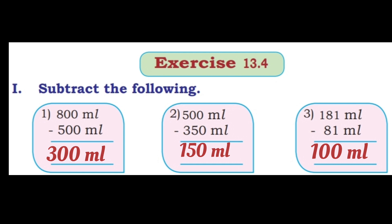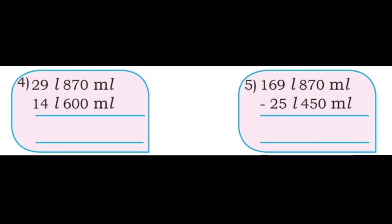Third question: 181 ml minus 81 ml. 1 minus 1 is 0, 8 minus 8 is 0, 1 remaining. Answer: 100 ml. Fourth question: 29 liter 870 ml minus 14 liter 600 ml.